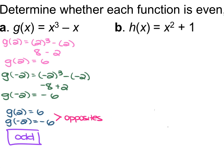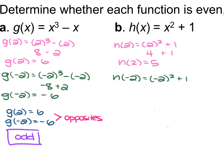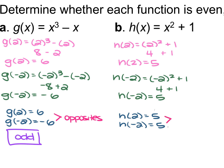For example b, h(x) = x² + 1. We find h(2): 2² + 1 = 4 + 1 = 5. Then h(-2): (-2)² + 1 = 4 + 1 = 5. Comparing these two numbers, h(2) equals 5 and h(-2) equals 5 — they are the same, so this function is even.